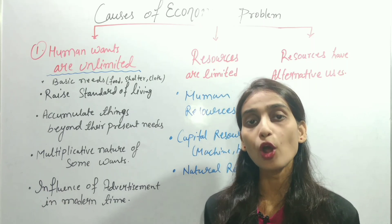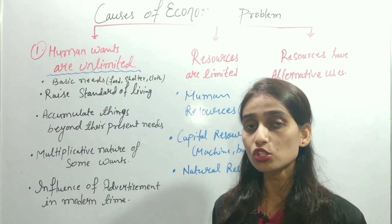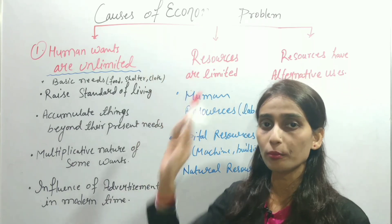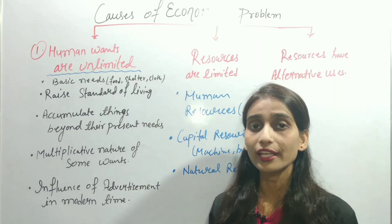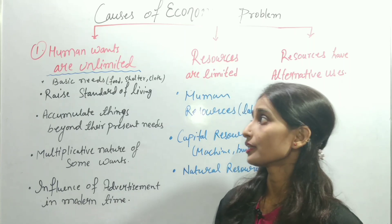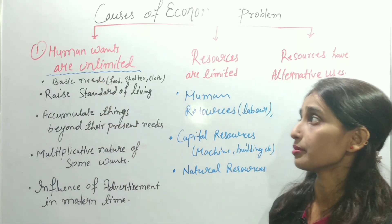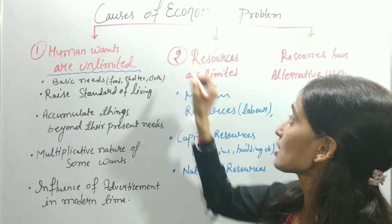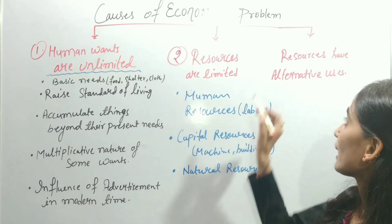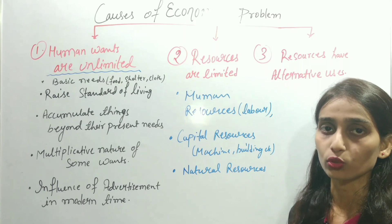Now, why do these problems arise in the economy? These are the causes of economic problems. There are three main causes: first, human wants are unlimited; second, resources are limited; and third, resources have alternative uses.